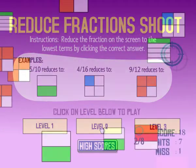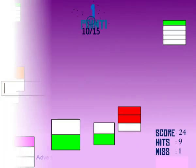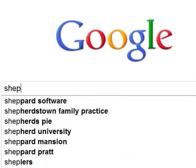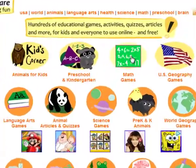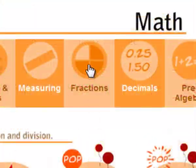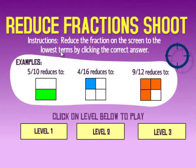So I click on one half and score. There are three levels to try, and the more you practice, the easier it'll get. Now, just type Shep into your favorite search engine to find ShepardSoftware.com. Click on Math Games, then on Fractions, and then on Reduce Fractions Shoot and try it for yourself.